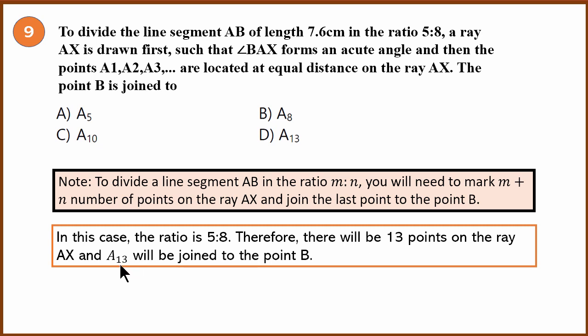So there will be 13 points on the ray AX, which means the B point will be joined to A13. First point will be called A1, last point will be called A13. Since there are 13 points, it will be A13. The correct answer is D.